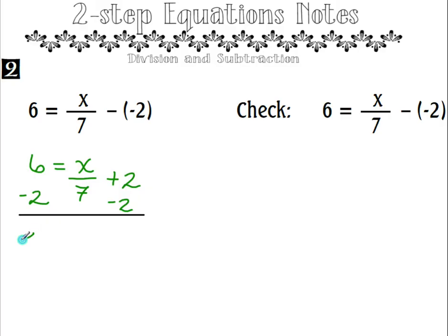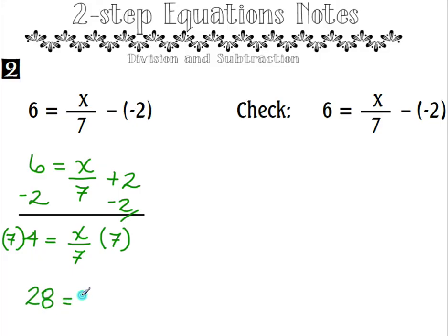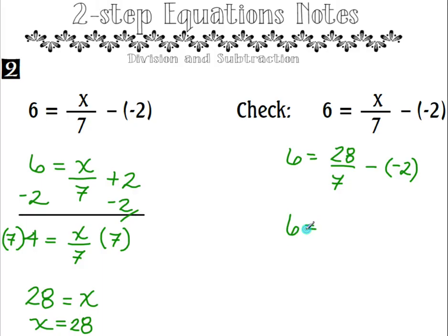6 minus 2 is 4, and we are left with x divided by 7 on the right side. To undo that division of 7, we are going to multiply by 7. 7 times 4 is 28, so x equals 28. Plugging back in: 6 equals 28 divided by 7 minus negative 2. 28 divided by 7 is 4, and minus negative 2 is the same as plus 2, so 4 plus 2 is 6. 6 equals 6 — that checks.